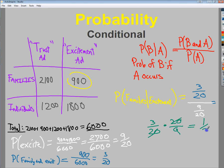3 divided by 9 is 1 over 3. So the probability that a family will choose an excitement ad is 1 third. So out of the 2,700 that choose that whole thing, I want to deal with just 900 of them. It makes a lot of sense. If you just look at the numerators, when you set it up as probabilities, the denominators will generally cancel. So you're really dealing with 900 over 2,700, which is 1 third. So that's conditional probability.